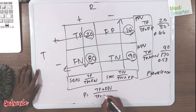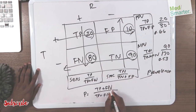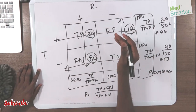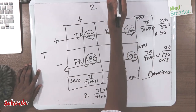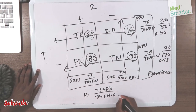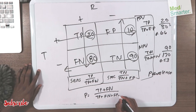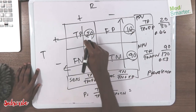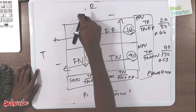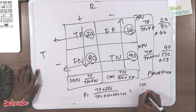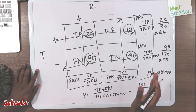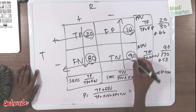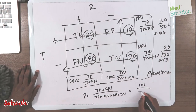So your true positive plus false negative — who actually have the disease — and your false positive plus true negative — who don't have the disease. You put everybody in the denominator. Therefore your 20 plus 80, the people that actually have the disease, is 100, divided by everybody: 20 plus 80 is 100, and then another 100 here — 90 plus 10 — is 200.